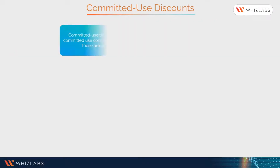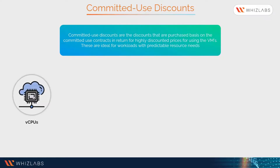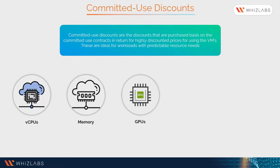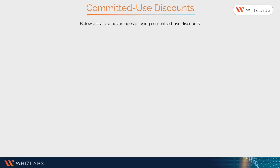Committed use discounts are discounts purchased on the basis of committed use contracts, in return for highly discounted prices for using VMs. These are ideal for workloads with predictable resource needs. With committed use discounts, you can use the following: vCPUs, memory, GPUs, local SSDs, and sole-tenant nodes.